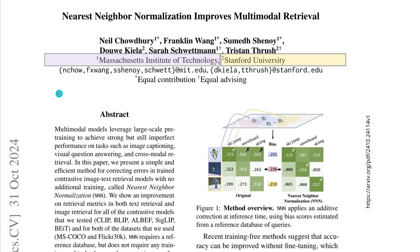From the last day of October 2024, we have a study by MIT and Stanford University. I've chosen this study because I want to show you that there are also simple ideas that have an effect in AI research. This is a beautiful example — talking about nearest neighbor normalization, a technique that improves multimodal retrieval.